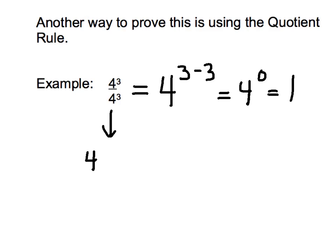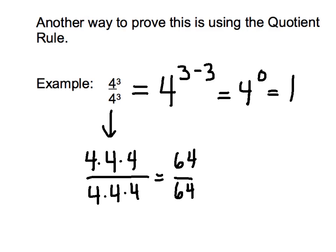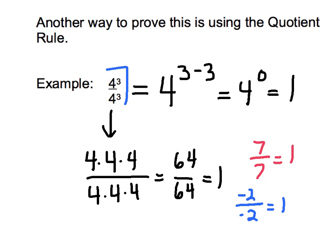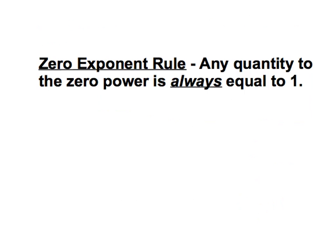4 to the third power means 4 times 4 times 4, which is 64. Over 4 times 4 times 4, which is again 64. 64 divided by 64 is 1. If I take 7 divided by 7, I know it's 1. Negative 2 divided by negative 2 is also 1. So anytime I take a number and divide it by itself — even an exponential number — I get 1. Let's write the zero exponent rule into our notes: any quantity to the zero power is always equal to 1.